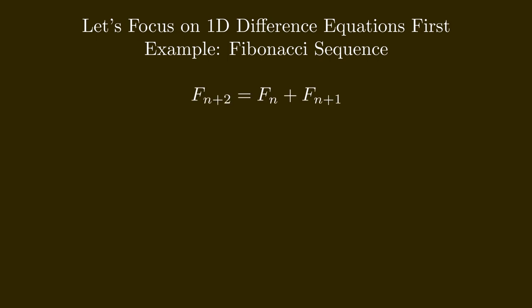Probably the most famous difference equation is the equation for the Fibonacci numbers. The Fibonacci numbers are generated by summing up two elements in a series and appending the result, generating an infinite series of numbers. So Fn+2 = Fn + Fn+1, and this is valid for all n's. But in order to make sense, we need to define the starting values: F0 = 0 and F1 = 1, from which we can calculate all subsequent numbers.